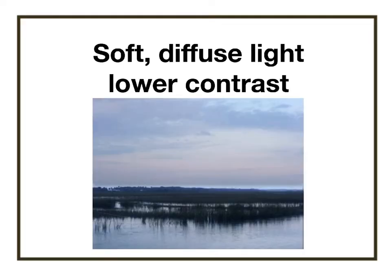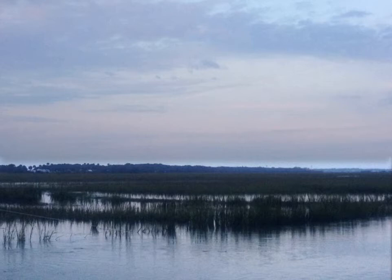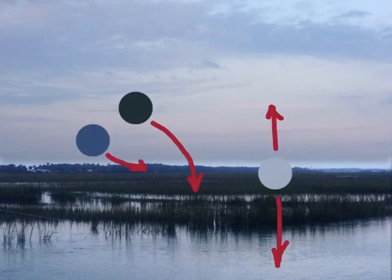Now let's look at a soft, diffused light — remember, it's going to be created through a lower contrast in value and hue. Looking at this photograph, you can tell there is no direct strong sunlight. It is a very misty, very low light condition — early morning with a very cloudy sky. When those color spots are pulled out, you can see very quickly how low the contrast is in the land itself.